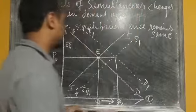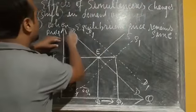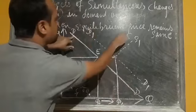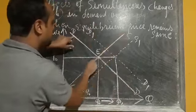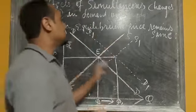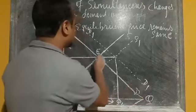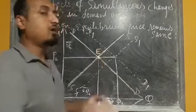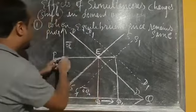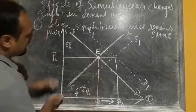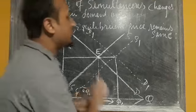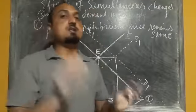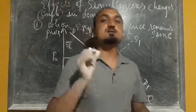Let me explain this again. The initial demand and supply curve — the dark lines — are intersecting each other at point E. So E is the equilibrium point, OP0 is the equilibrium price, and OQ0 is the equilibrium quantity. Now if demand and supply change by the same proportion — say both change by 10% — the new curves are D1D1 and S1S1.